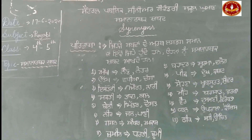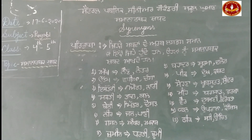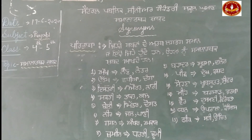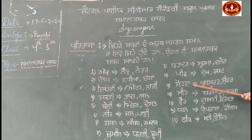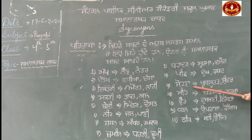ਨੰਬਰ 9: ਬਹਾਦਰ, ਸੂਰਮਾ, ਦਲੇਰ। ਨੰਬਰ 10: ਪੀੜ, ਦੋਖ, ਕਸ਼ਟ। ਨੰਬਰ 11: ਸੋਹਣਾ, ਖੂਬਸੂਰਤ, ਸੁੰਦਰ।